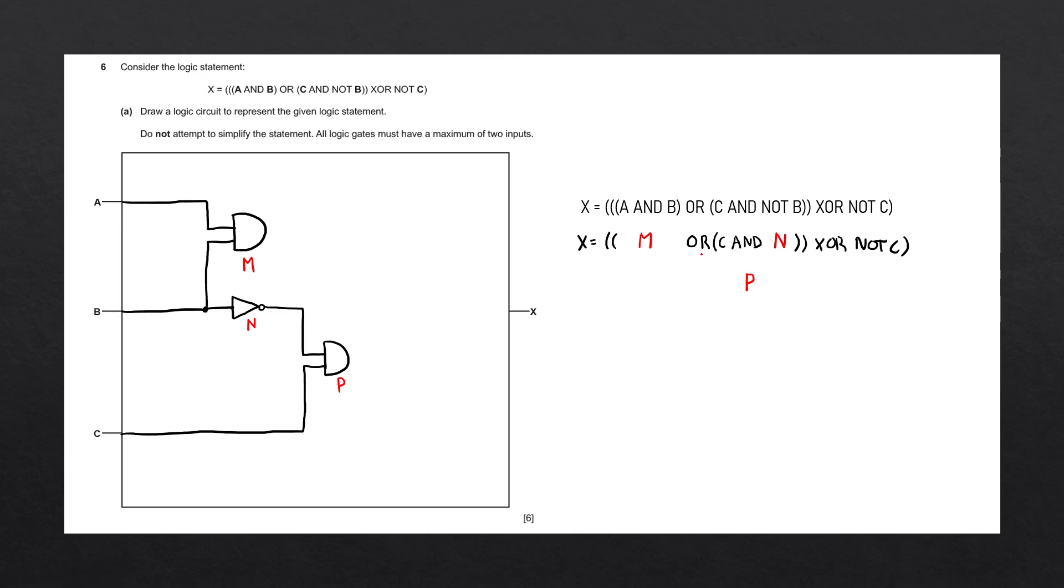Again, we're going to bring everything down, and let's go back to our first step. Let's look for the logic gate that has the most brackets. In this case, it is the OR gate. So we'll draw the OR gate with the inputs M and P. And as before, we're going to label it with Q. Let's bring down Q and replace M or P with Q.